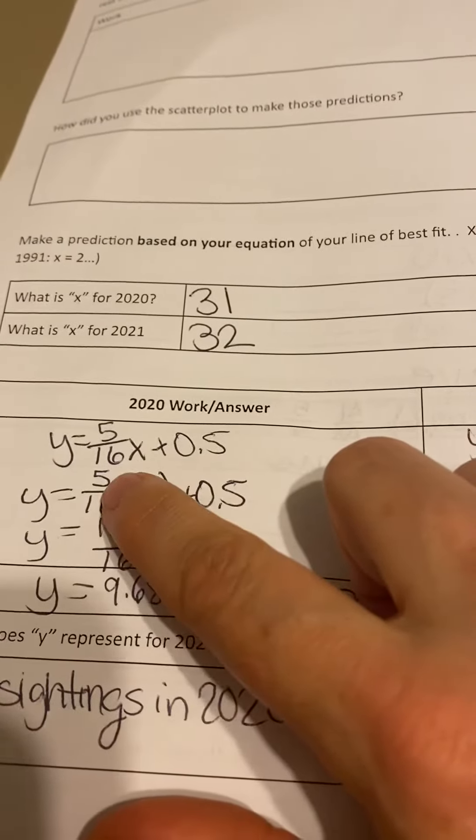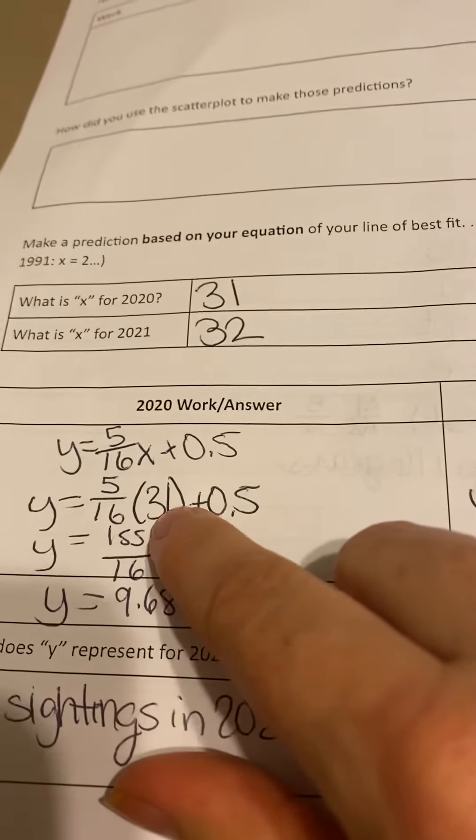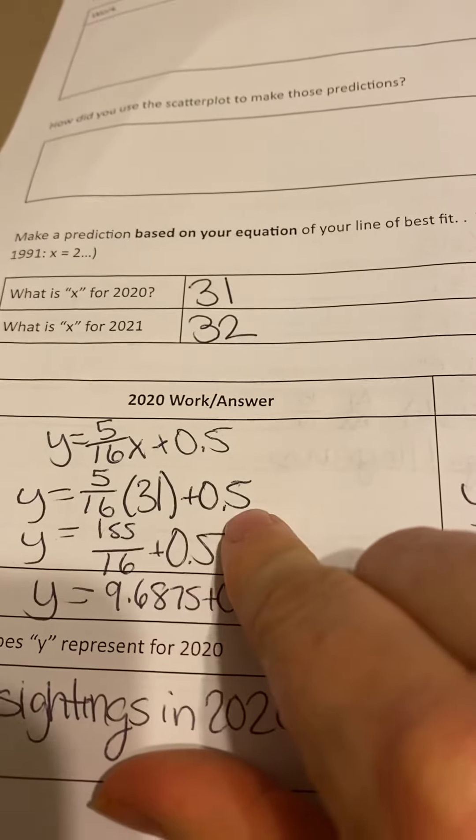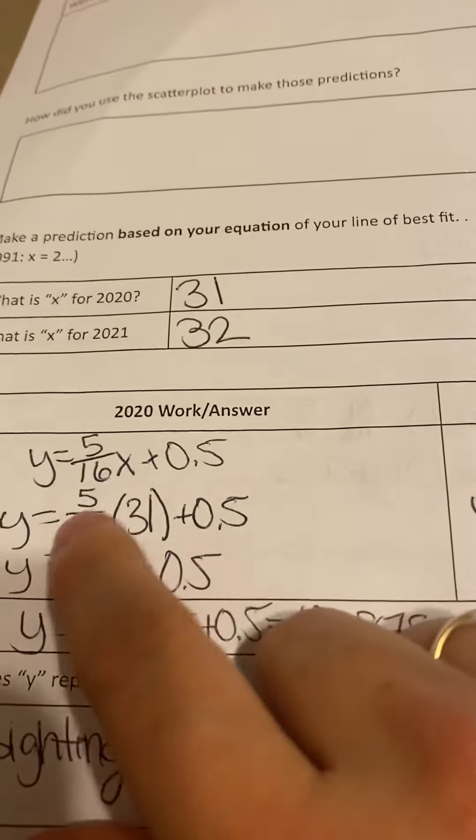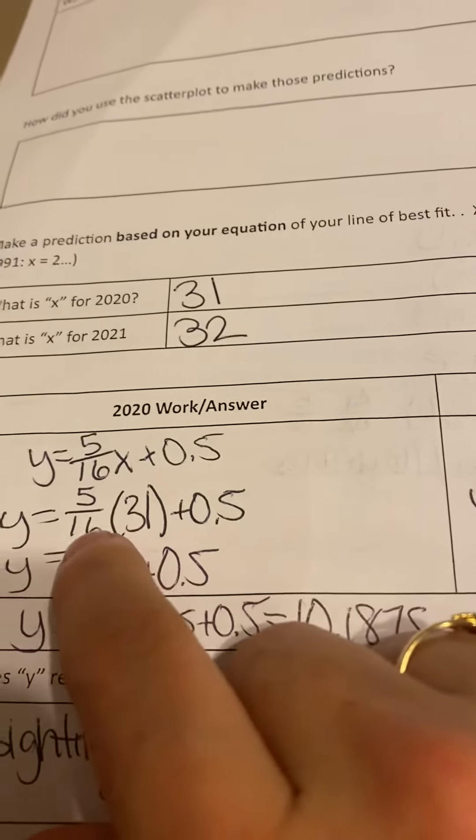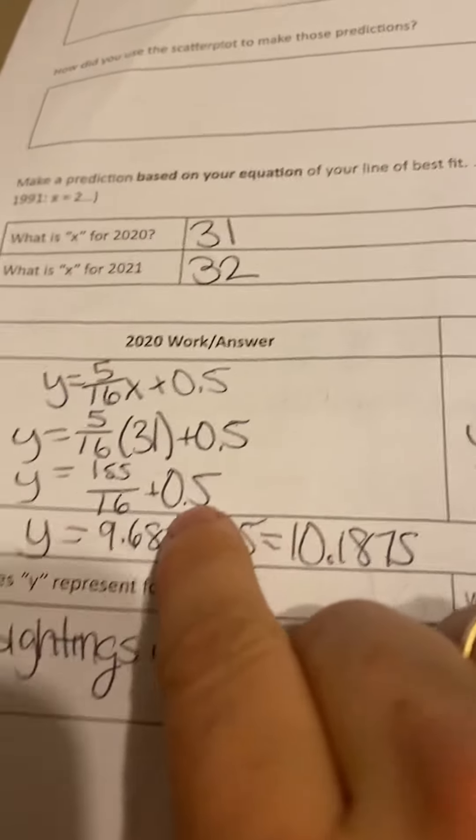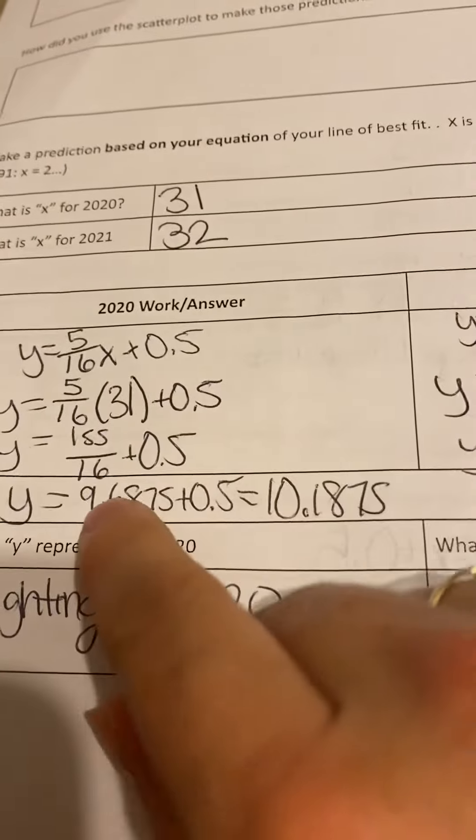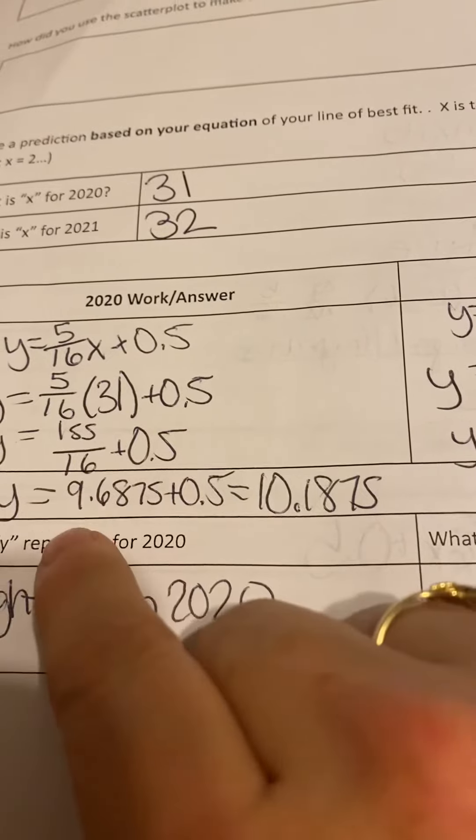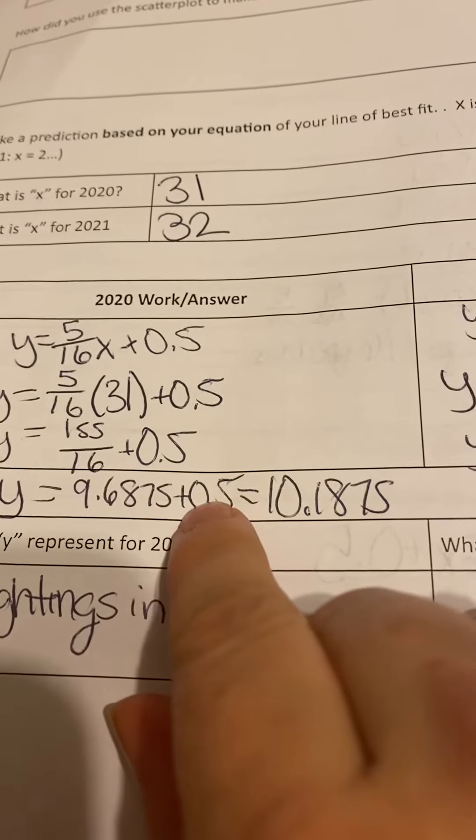So you'd have 5 sixteenths times X, which when you're finding for 2020 would be times 31 plus 0.5. So then first, you would do your multiplication. 5 times 31 is 155. 16 times 1 is 16. You get that plus 0.5. Then I went ahead and I made this a decimal. So 155 divided by 16 gives you that decimal. And then you add 0.5 to it.